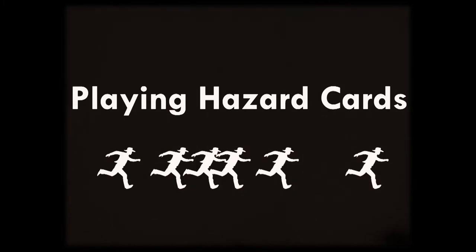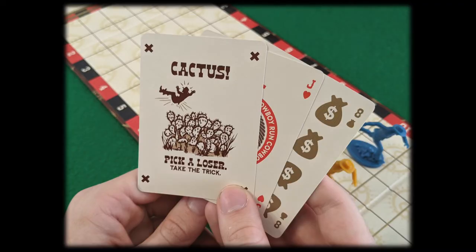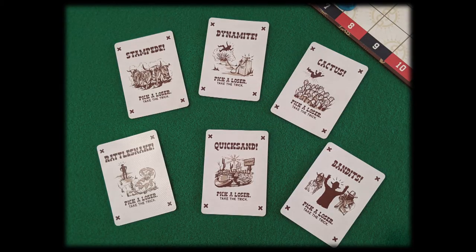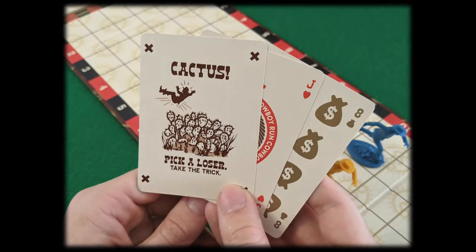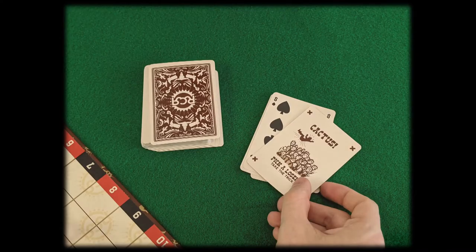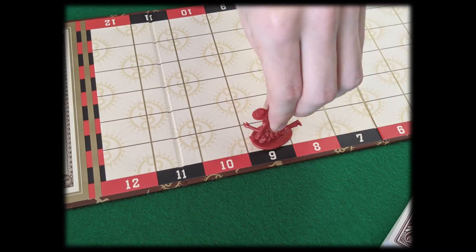Playing Hazard Cards. One of the funnest parts of the game is playing Hazard Cards on your opponents. The deck includes six Hazard Cards. They are wild, and players can hold these in their hand and play them on their turn whenever they like. When you play a Hazard Card, you score a point and take the trick.